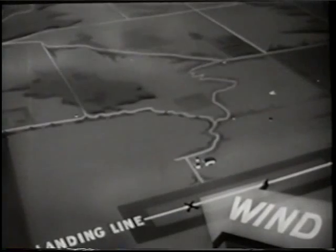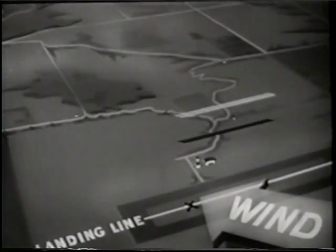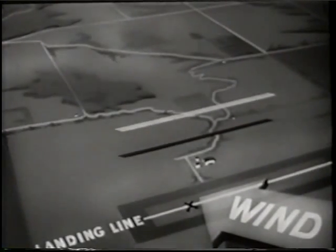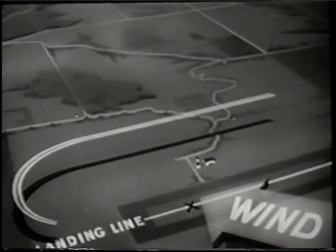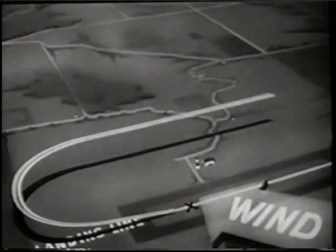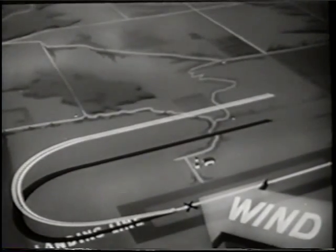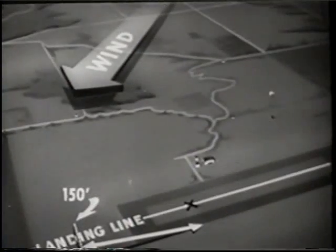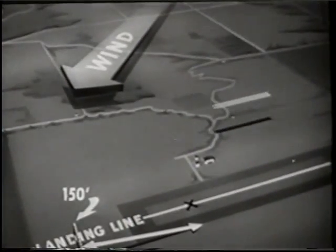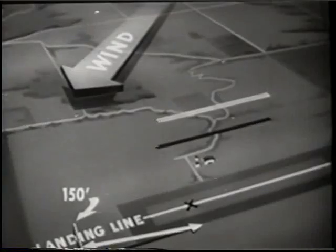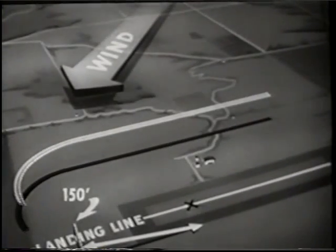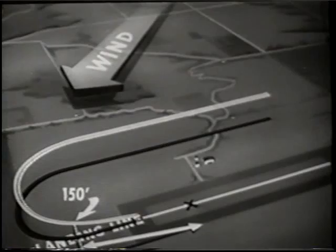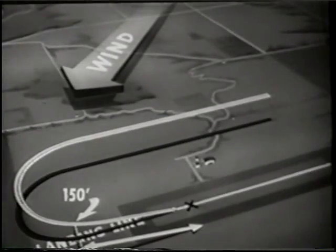To review: if it is a right crosswind blowing you away from the landing line, the bank of your approach turn is fairly shallow and your power reduction is more gradual. If it is a left crosswind blowing you toward the landing line, your power reduction is more rapid and your approach turn more steeply banked to avoid being drifted past the landing line.